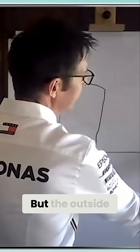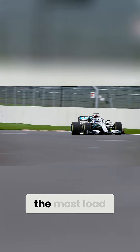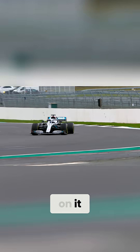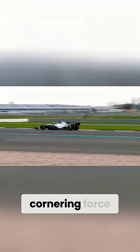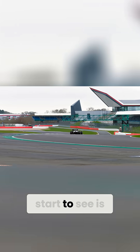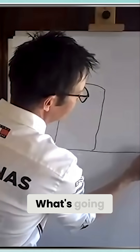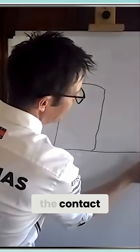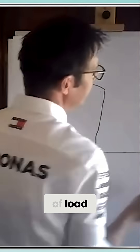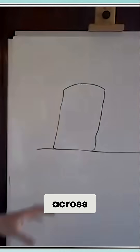The outside tyre is the most important one because it's got the most load on it and can therefore generate the most cornering force. You'll also start to see distortion — what's going on is the contact patch is generating a lot of load and is dragged across.